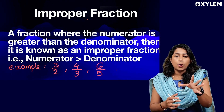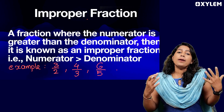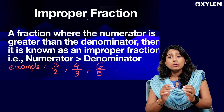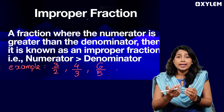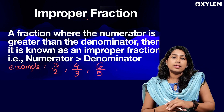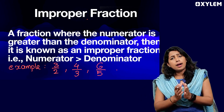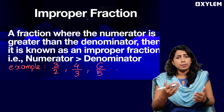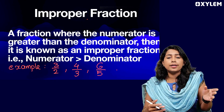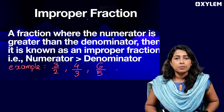In an improper fraction, the numerator is greater than the denominator. This fraction, where the numerator is greater than the denominator, is known as an Improper Fraction. Examples of improper fractions are: 3 by 2, 4 by 3, 6 by 5. Improper fraction is one of the key terms you need to know.